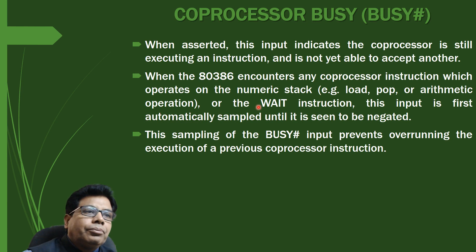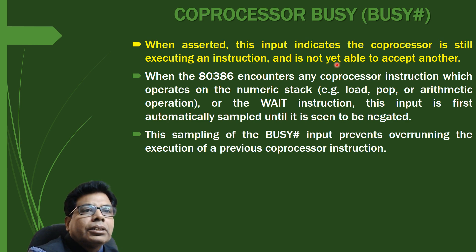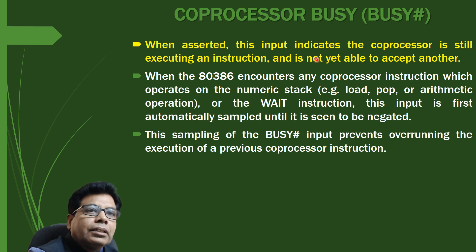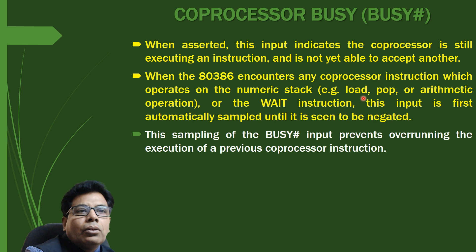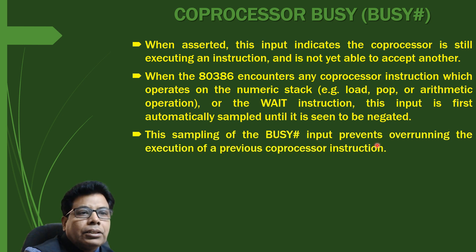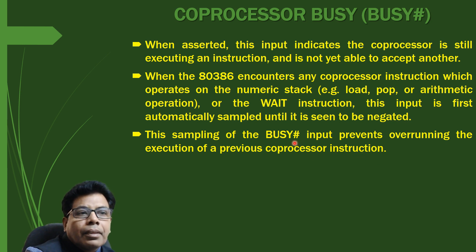The next signal is coprocessor BZ (busy). When asserted, this input indicates the coprocessor is still executing an instruction and is not yet able to accept another — that means the coprocessor is busy with execution of an instruction. This is BUSY#, meaning it is active low. So when the 80386 encounters a coprocessor instruction which operates on the numeric stack — for example load, pop, arithmetic operations, or the WAIT instruction — this input is first automatically sampled until it is seen to be negated. This sampling of the BUSY# input prevents overrunning the execution of the previous coprocessor instruction, so the processor always knows whether the coprocessor is busy or free.